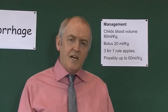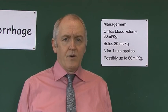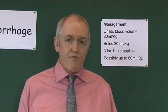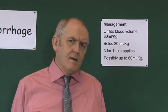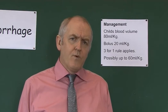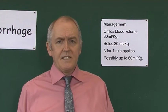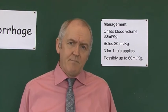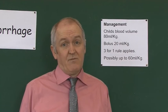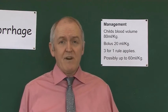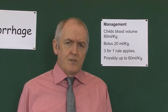We then need to titrate the response and see what more fluids the child is going to need — are they responding, responding temporarily, or not responding at all, as we looked at for adults? In children, the three-for-one rule applies, meaning we might need to give up to 60 mls of warmed crystalloid fluid per kilogram of body weight after significant haemorrhage. Be ready to give more warmed crystalloid fluid, titrated according to response.